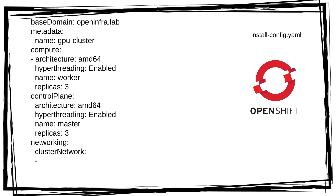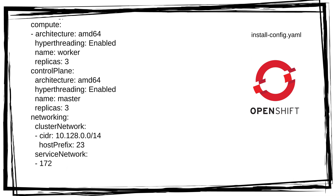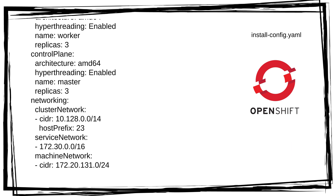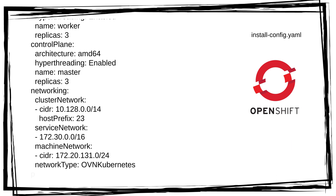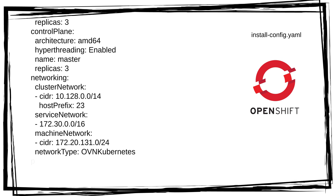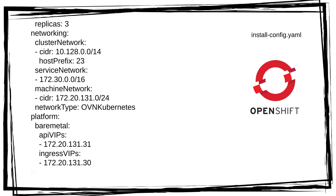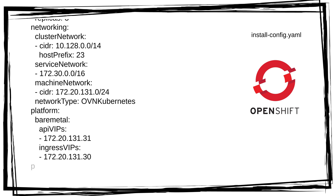Then in the networking section, you want to configure the address space to be used by Kubernetes. The machine network is where you define your bare metal network. The network type will almost always be OVN Kubernetes, which is the newest and the default. Finally, the two virtual IPs for the API and ingress. At the bottom of the file, paste your pull secret copied earlier and the SSH public key to be injected in the nodes.